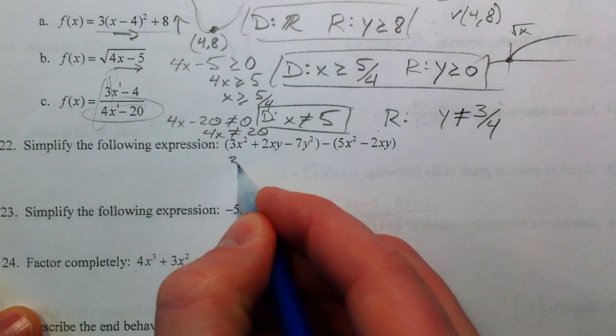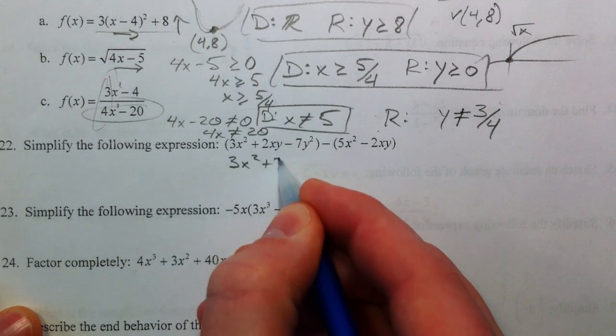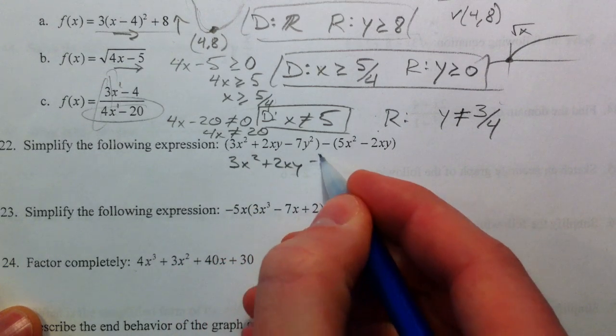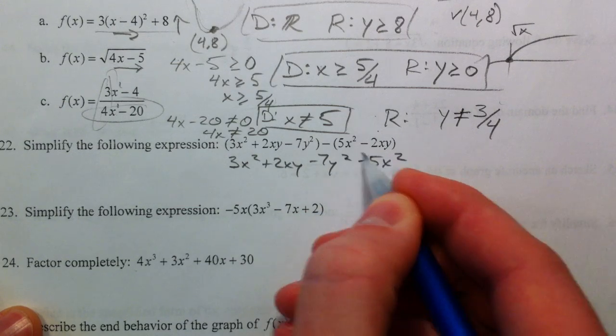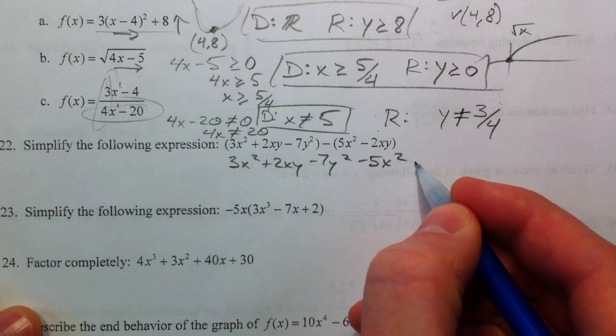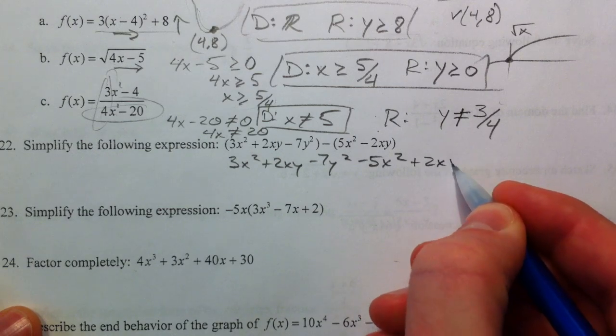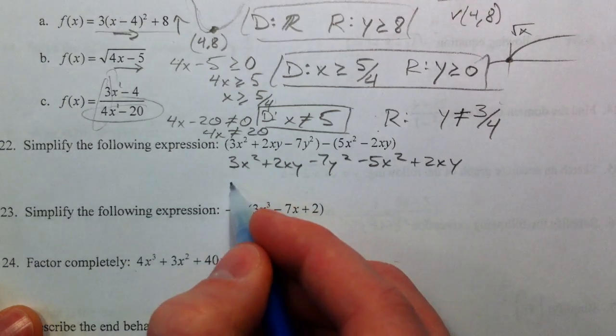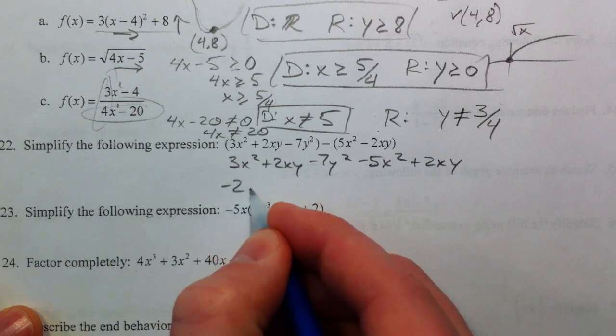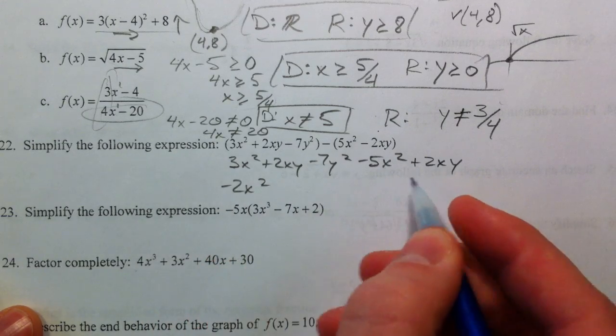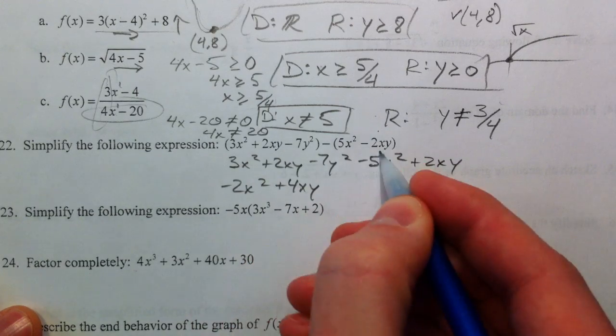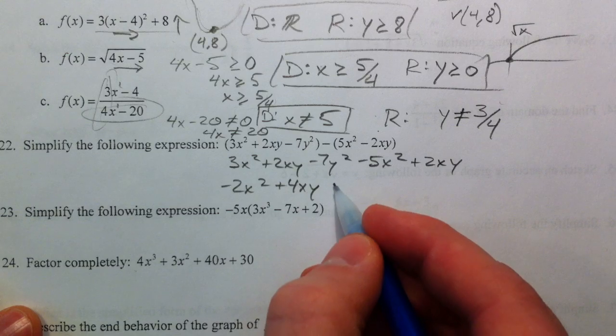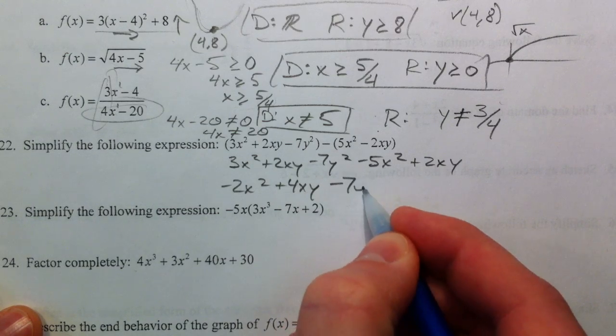Simplifying the expression, just make sure you distribute that minus to all of the second one. Minus 5x squared, minus a negative 2xy, so that's plus 2xy. So 3 minus 5 is a negative 2x squared. 2xy plus 2xy is a 4xy, which had you not distributed that negative, you might have canceled those out. And then minus 7y squared.